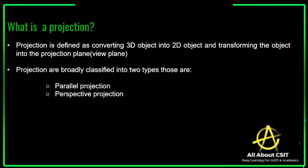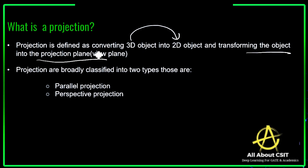A projection is defined as converting a 3D object into a 2D object and transforming the object onto the projection plane, which is nothing but the view plane — whatever you are seeing. This concept we call a projection.